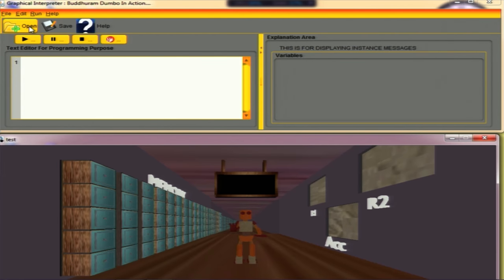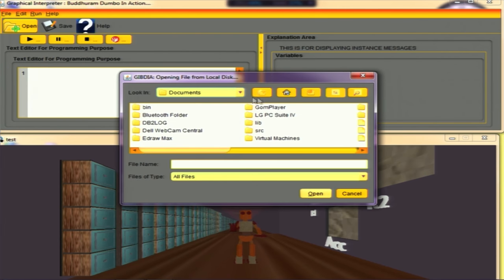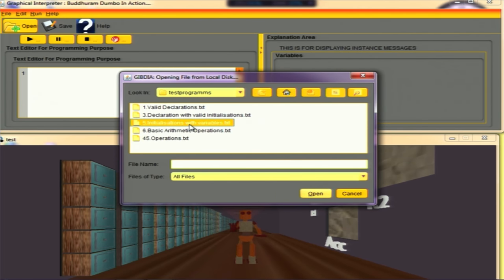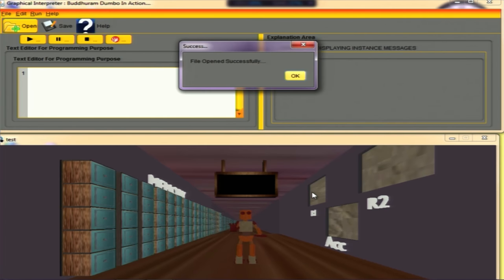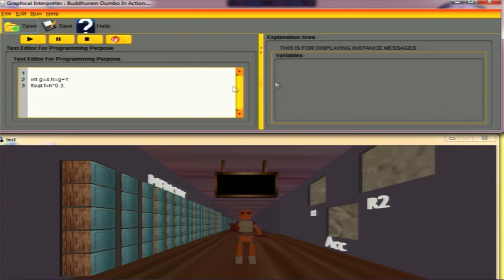Good evening everyone. Now let us have a small and quick demo about our project. Here we can see we have two windows. First is a framework and second is a graphical framework. The code of C is written in the first framework and the execution can be seen in the second window. We will open a file. Now it is open.